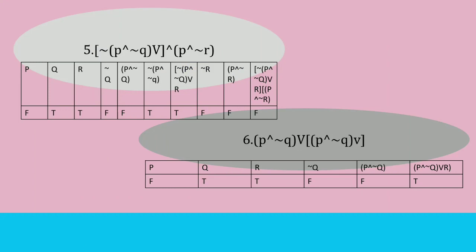For number 5, P is false, Q is true, and R is true. First, we determine the negation of Q. Since Q is true, negation Q is false. Then we determine the whole statement inside the parenthesis: P disjunction with negation Q. Based on the truth table, negation Q is false and R is true, which results in true based on the truth table.